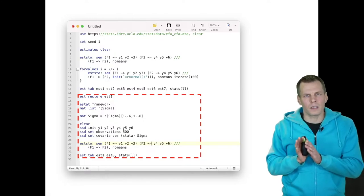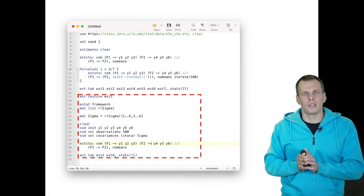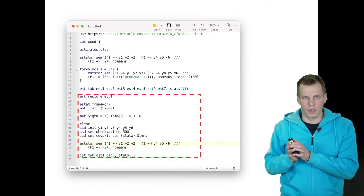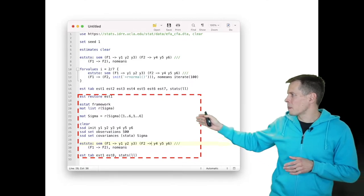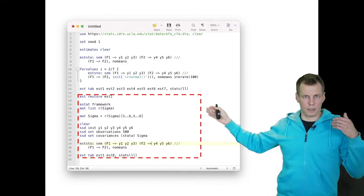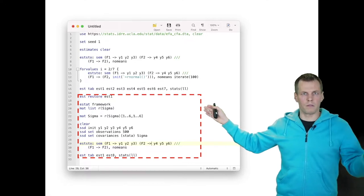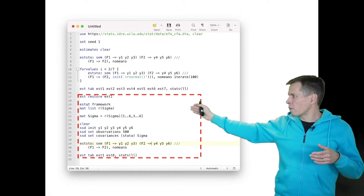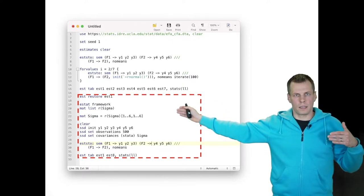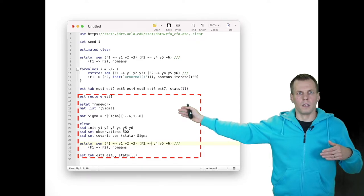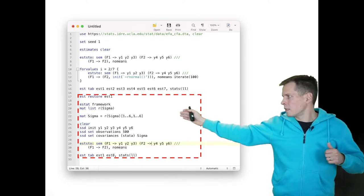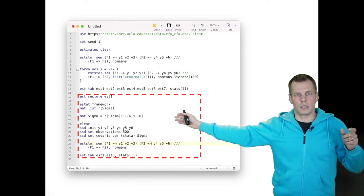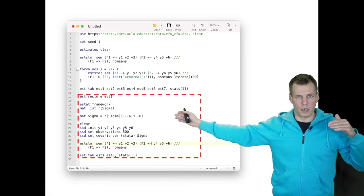But let's take a look at how we estimate the same model using the model implied covariance matrix for the indicators as our sample. So we do SDAT framework in STATA and that gives us the model matrices or it gives us this SEM output in matrix format. And then from the return values we get sigma, which is the model implied covariance matrix. And then we take the first six rows and first six columns because these are the observed indicators, then the latent variables. We are only concerned about the observed indicators here.